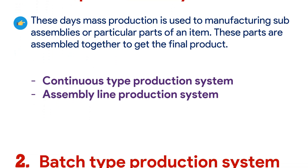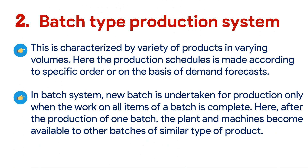The next type is the batch type production system. This is characterized by a variety of products in varying volumes. Here the production schedule is made according to specific orders or on the basis of demand forecasts. In a batch system, a new batch is undertaken for production only when the work on all items of a batch is complete. After production of one batch, the plant and machinery become available to other batches of similar types of product.